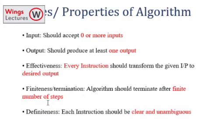And the final one is definiteness. All the instructions should be very clear and unambiguous. So these are the basic properties of algorithm.